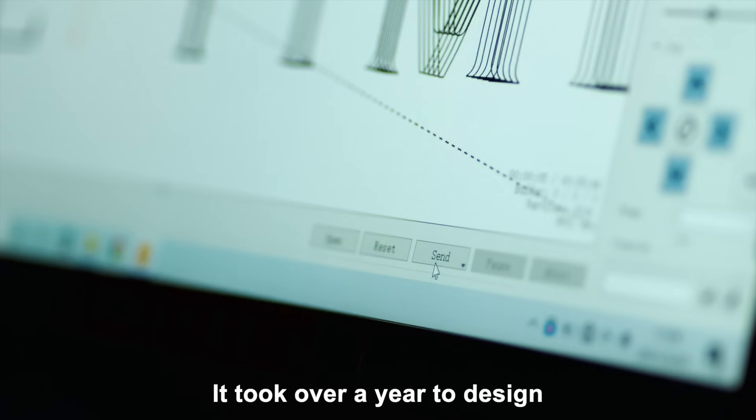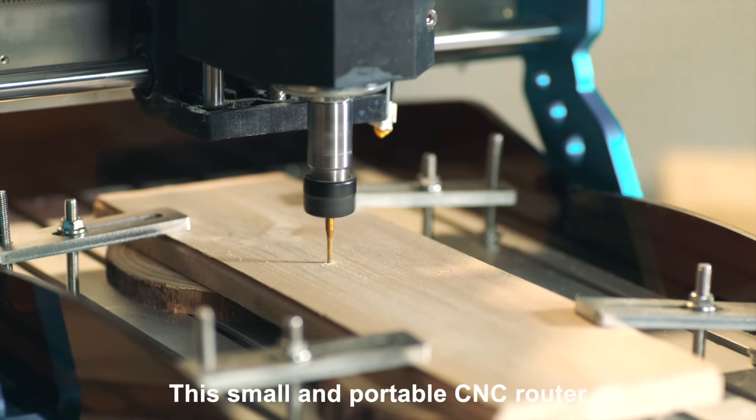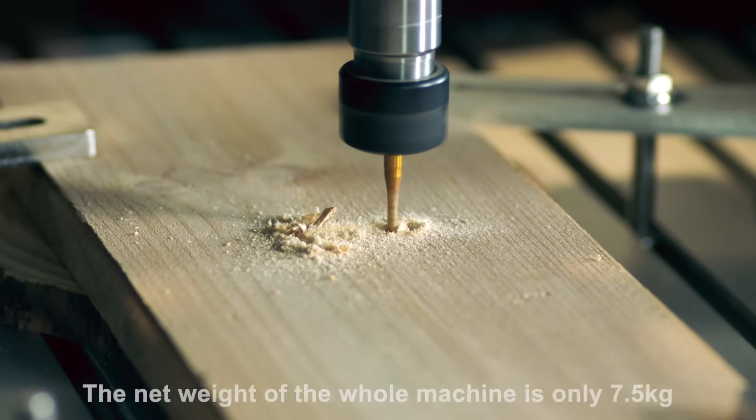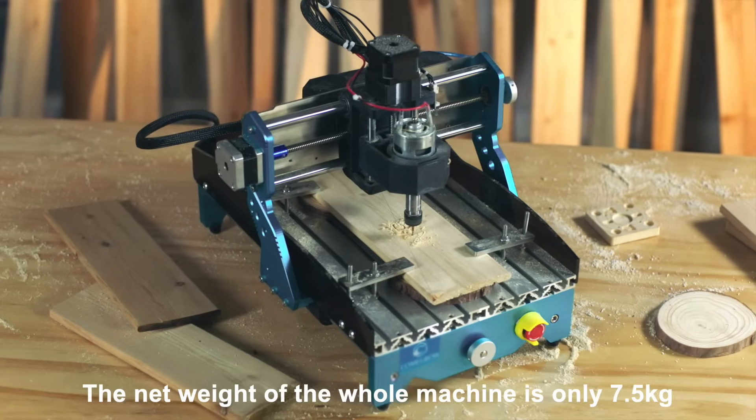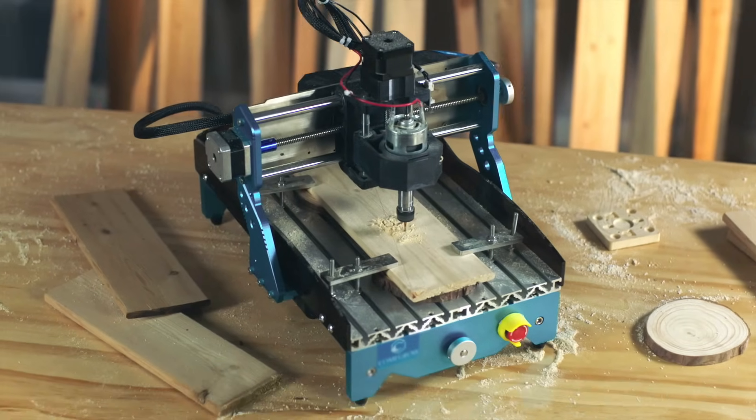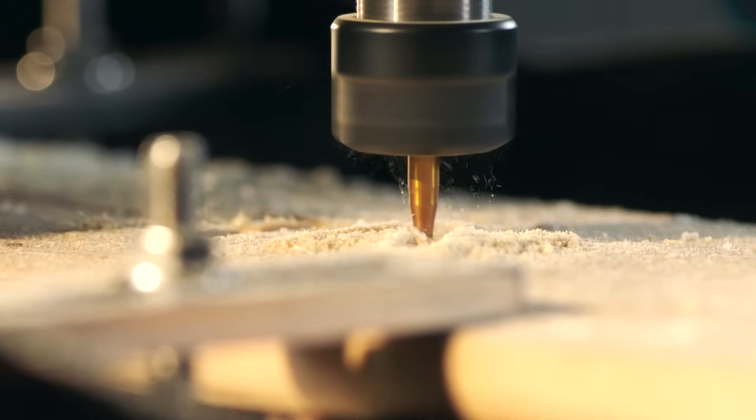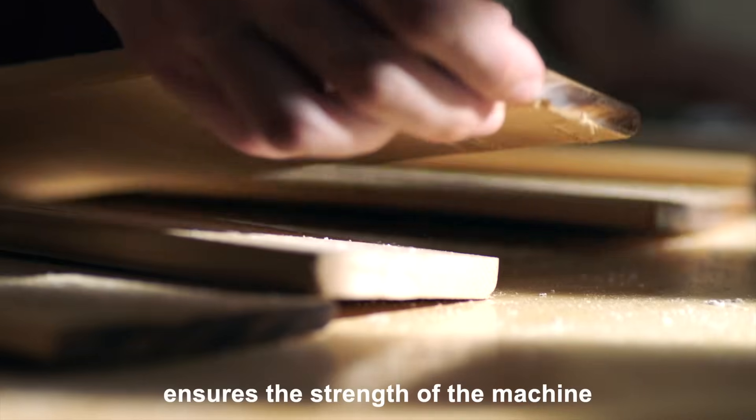It took over a year to design this small and portable CNC router. The net weight of the whole machine is only 7.5 kilograms, while the all-aluminum alloy body ensures the strength of the machine.